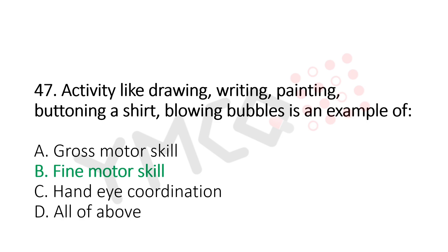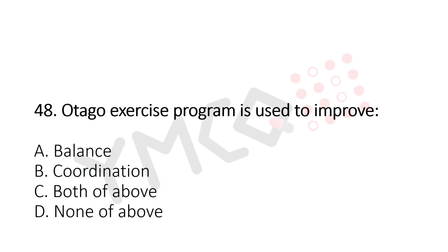Question number 48: Otago exercise program is used to improve: Option A, balance; Option B, coordination; Option C, both of the above; Option D, none of the above. The answer is Option C, both of the above.